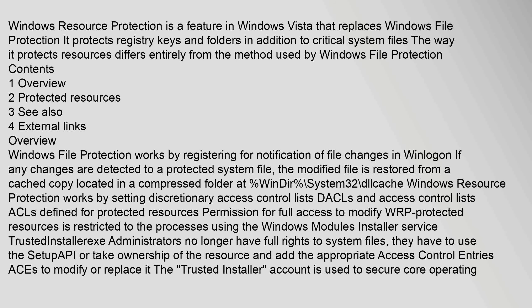Windows Resource Protection is a feature in Windows Vista that replaces Windows File Protection. It protects registry keys and folders in addition to critical system files. The way it protects resources differs entirely from the method used by Windows File Protection. Contents: one, overview; two, protected resources; three, see also; four, external links.